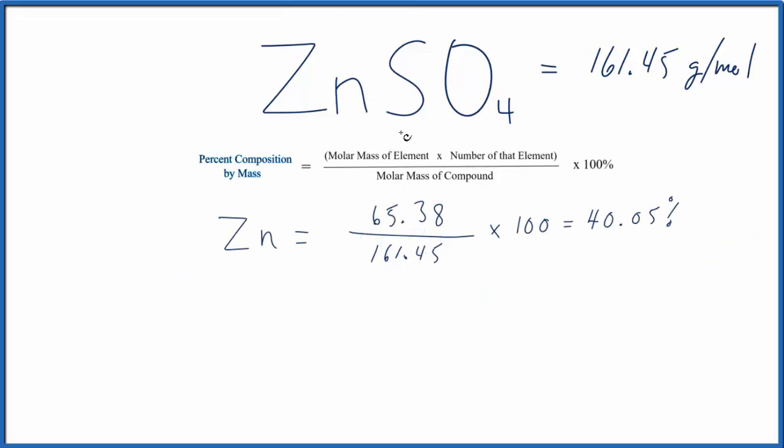Next, let's find the percent composition by mass of the sulfur. So we write our sulfur here from the periodic table, put our molar mass for the whole zinc sulfate here, multiply by 100, and we get 19.86%.